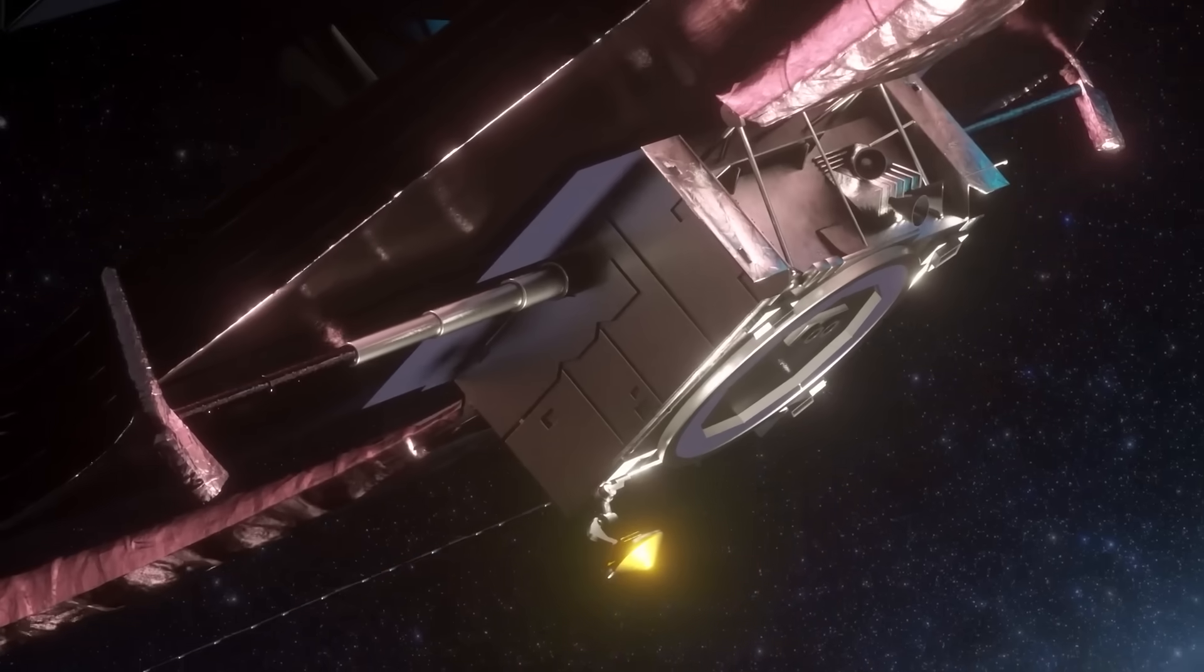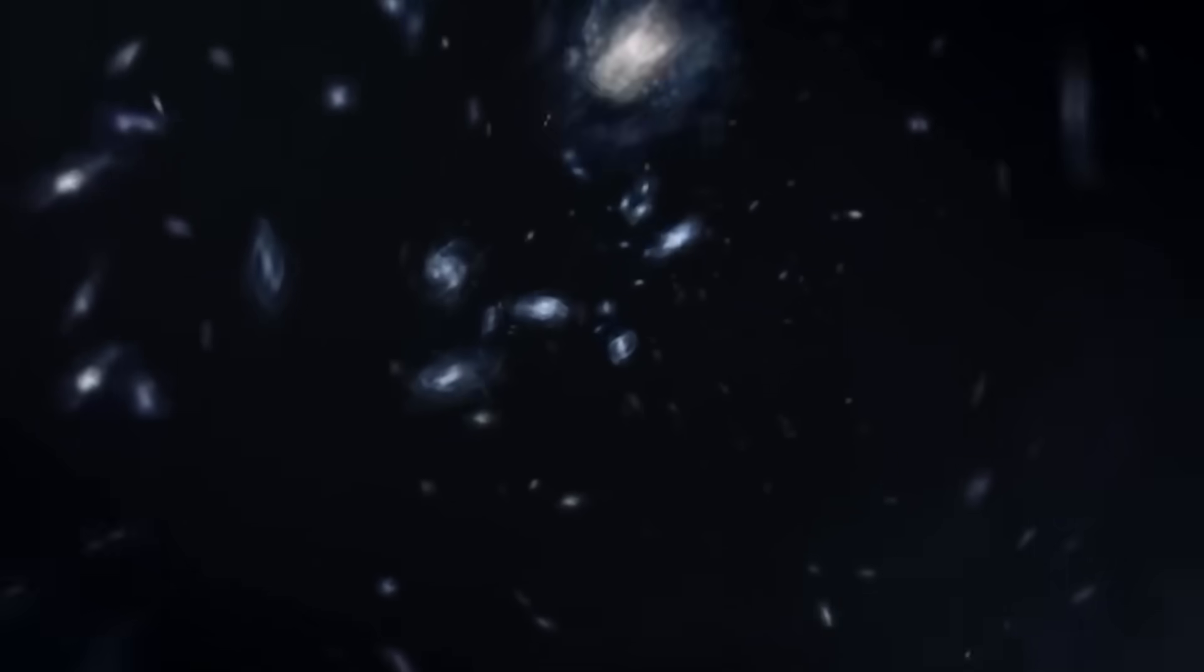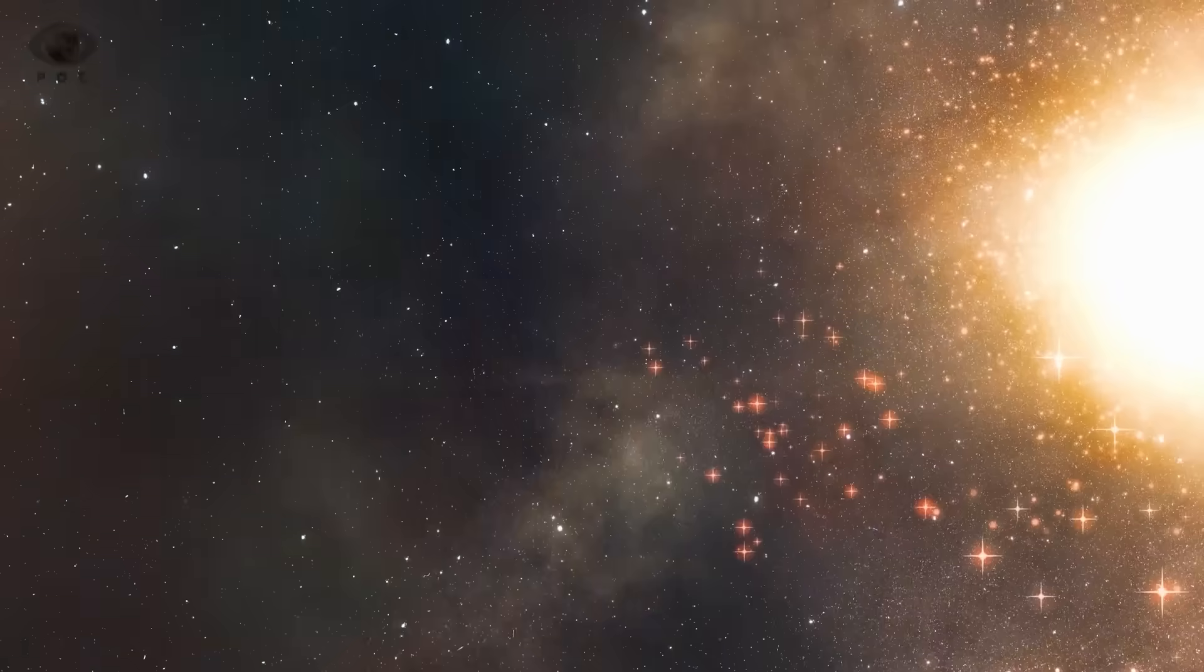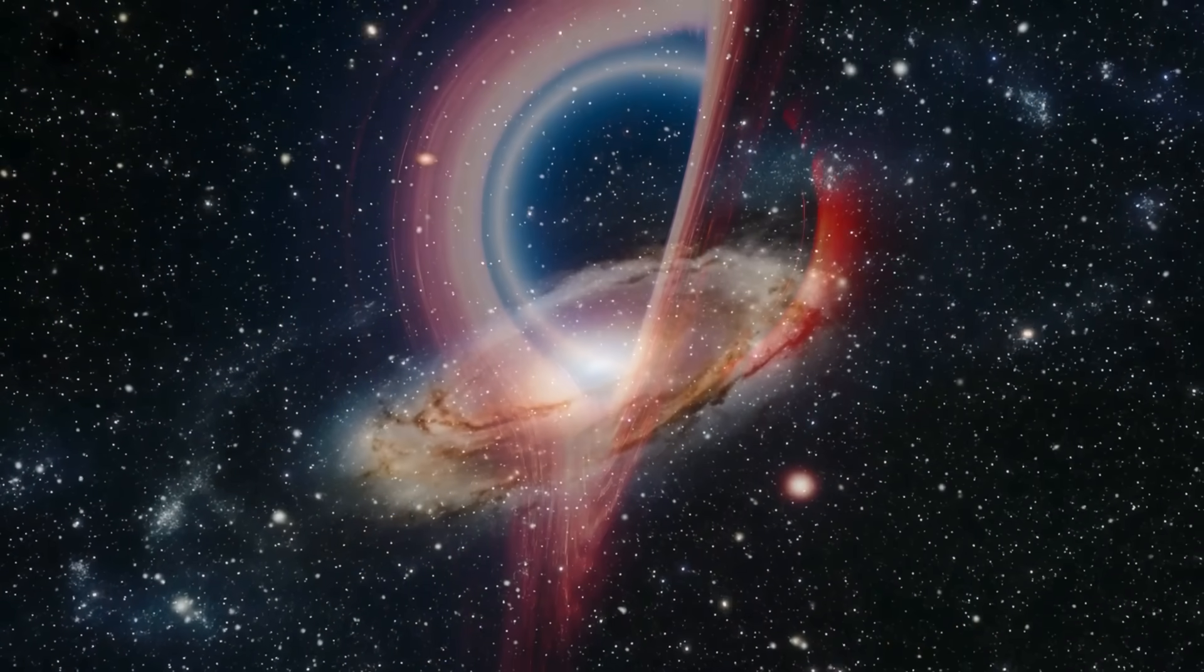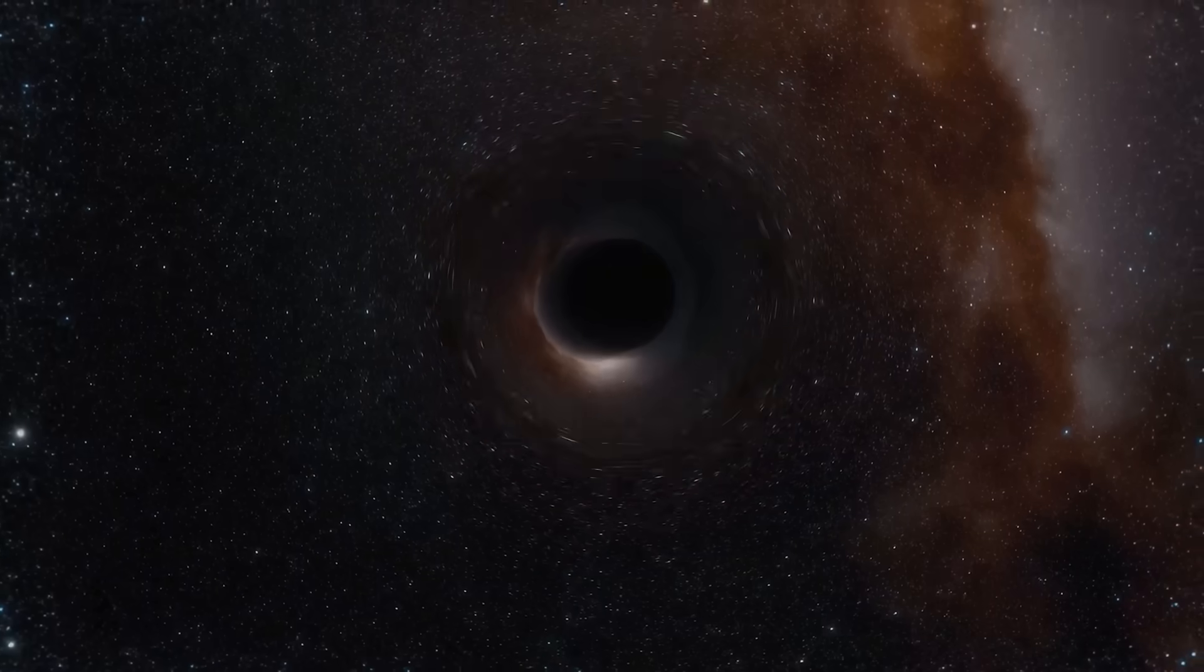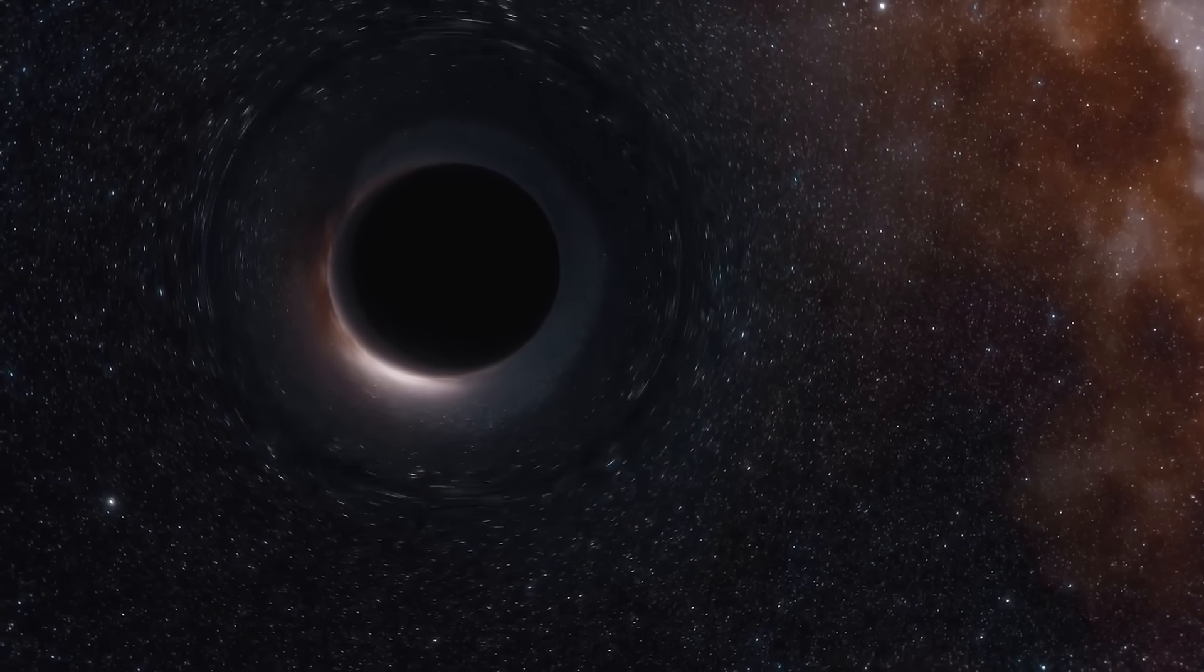In a region far from any major galaxy, Webb detected something completely unexpected. A gravitational lens effect in a patch of space where nothing visible exists. No stars, no galaxies, no black holes. Yet light from more distant galaxies bends, curves, and distorts as if something massive is hiding there. Astronomers have tentatively attributed this to dark matter, a form of mass we can't see but which exerts gravitational force. But the precision and intensity of this lensing effect challenge even that theory.